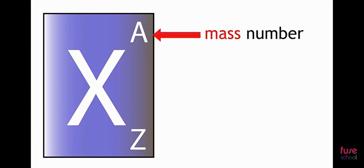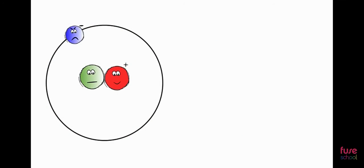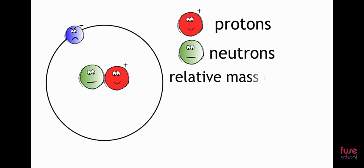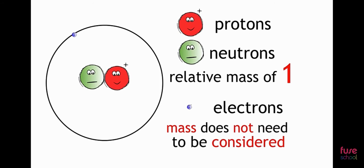The next number we look at is the mass number. The mass number has a symbol A. The mass number tells you how many protons and neutrons are in one atom of an element. We need to remember that protons and neutrons each have a relative mass of 1, and that electrons are so small that their mass does not need to be considered in the mass number of an atom.